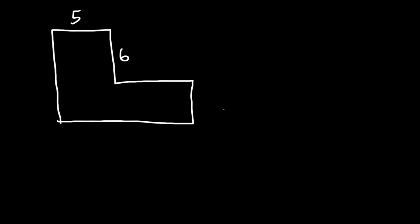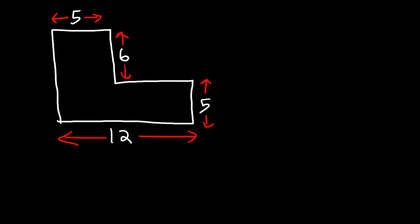So let's say this section is 5 inches, this part is 6, this part is 5, and this is 12. Let me highlight specifically which parts are 5. This part is 6, and here you have 12. Go ahead and find the area and the perimeter of this irregular shape.